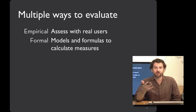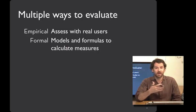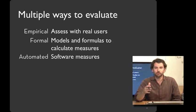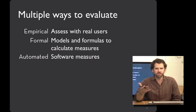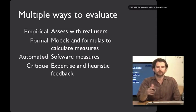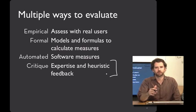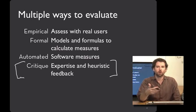It's also possible to have formal methods where you're building a model of how people behave in a particular situation, and that enables you to predict how different user interfaces will work. If you can't build a closed-form formal model, you can also try out your interface with simulation and have automated tests that can detect usability bugs and effective designs. This works especially well for low-level stuff. What we're going to talk about today is critique-based approaches, where people are giving you feedback directly based on their expertise or a set of heuristics.